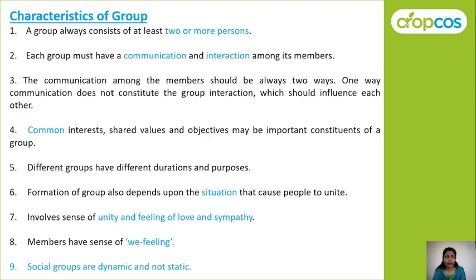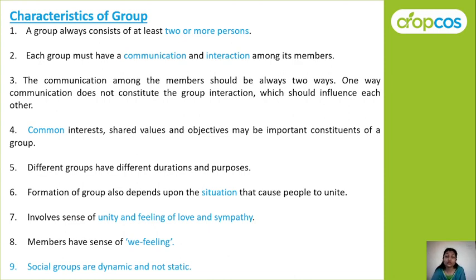Now let us see the characteristics of a social group. A group always consists of at least two or more persons. Each group must have communication and interaction among its members, and that communication should always be reciprocal — two-way. The group should have something in common: common interest, common values, and common objectives. Different groups have different durations and purposes — some are temporary, some are permanent — and their objectives also differ.